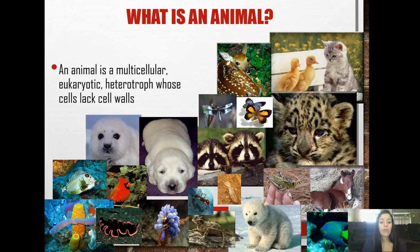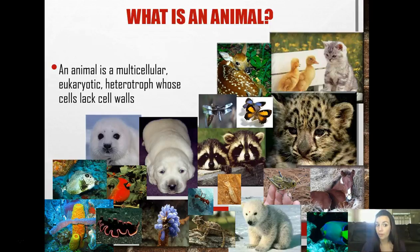Now let's get into animals in general. What is an animal? An animal is a multicellular eukaryotic heterotroph whose cells lack cell walls. Here's just an example of all the many animals that are in this world.